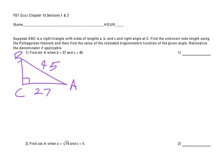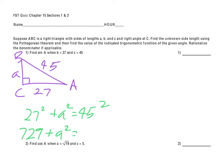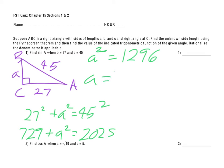Now if I'm finding the sine of A, I need to find the length of side A. I can do that just using the Pythagorean theorem. So I would set up 27 squared plus A squared equals 45 squared. Using a calculator, we end up getting 729 plus A squared equals 2,025. If we subtract the 729 from both sides, we get A squared equals 1,296. And when we take the square root of both sides, we find out that A is just 36.